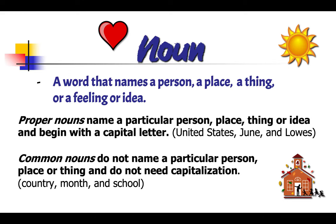We start with a noun. It's a word that names a person, a place, a thing, a feeling, or idea. For example, we have a heart there. That represents love, which is a feeling, or the sun is a thing.